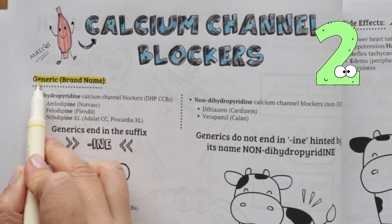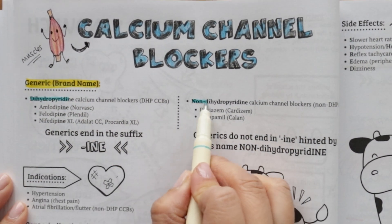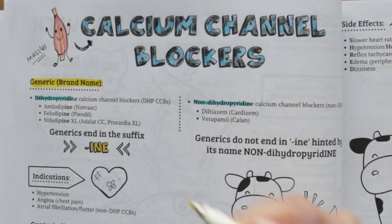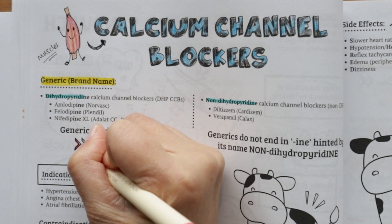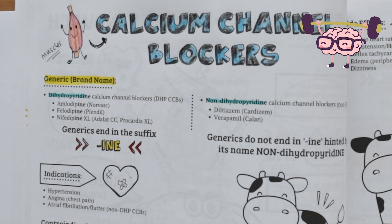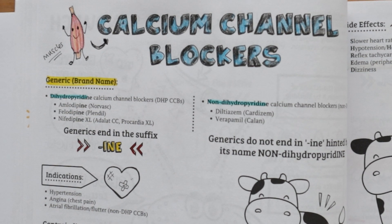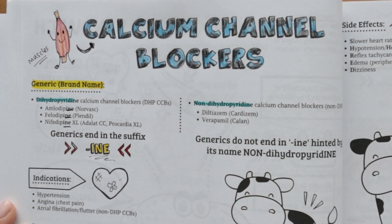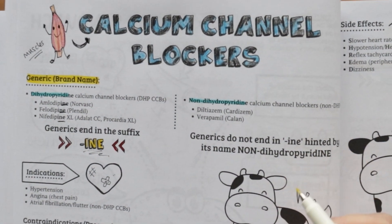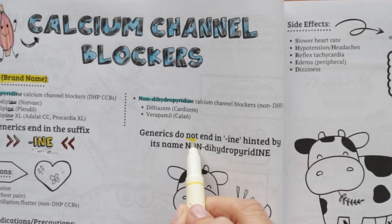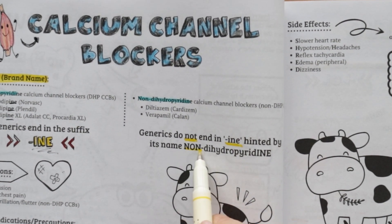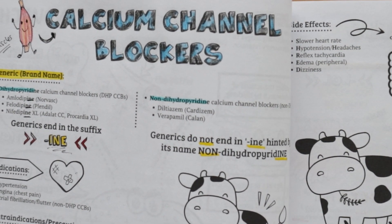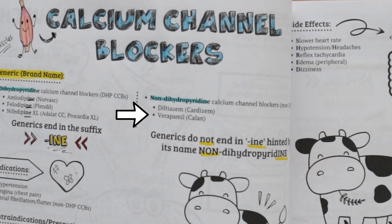There are two types of calcium channel blockers: dihydropyridine and non-dihydropyridine. It's important that you understand which drugs belong to which type. Dihydropyridine calcium channel blockers tend to end in the suffix "-ine", such as amlodipine, felodipine, and nifedipine. In contrast, non-dihydropyridine calcium channel blockers do not end in "-ine" — the "non-ines" or non-dihydropyridines — which include diltiazem and verapamil.